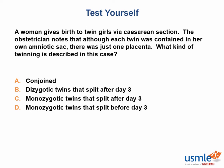Time for another test yourself. A woman gives birth to twin girls via caesarean section. The obstetrician notes that although each twin was contained in their own amniotic sac, there was just one placenta. What kind of twinning is described in this case? The answer is C. Monozygotic twins that split after day 3 yield a monochorionic, diamniotic pregnancy. Conjoined twins occur in monochorionic, monoamniotic pregnancy. Dizygotic twins are two separate zygotes that were never fused to begin with. And monozygotic twins that split before day 3 yield a dichorionic, diamniotic pregnancy.